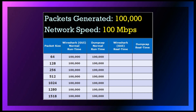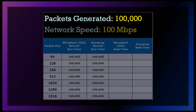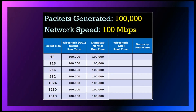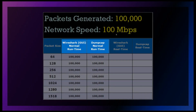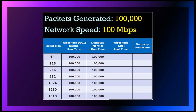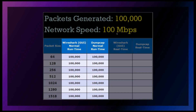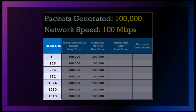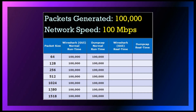Here are some of the results from our test. We generated 100,000 unicast packets at 100 megabits per second. Our initial tests were done in normal runtime kernel. Our Wireshark GUI results and DumpCap were able to capture all 100,000 packets for all packet sizes from 64 bytes all the way to 1518 bytes.